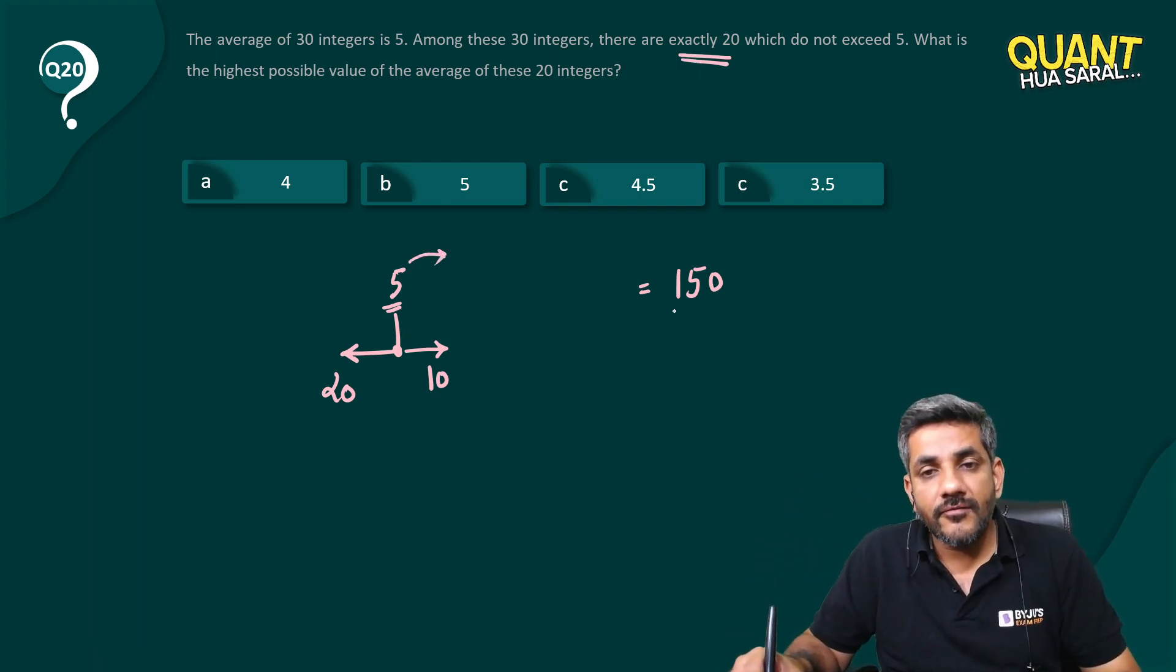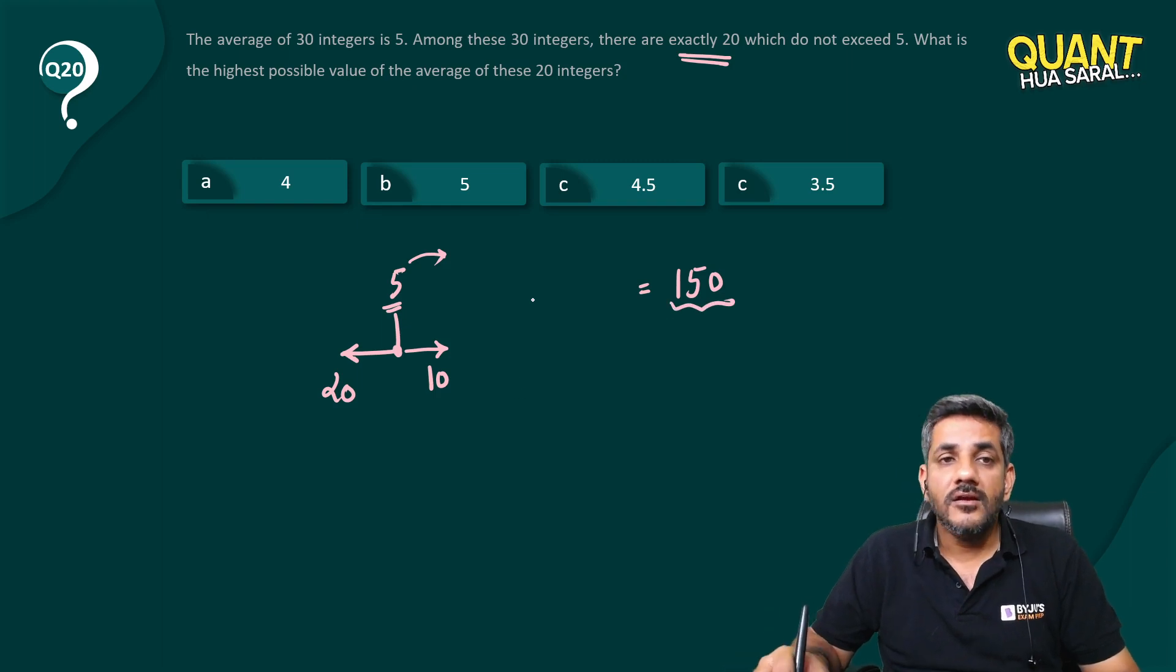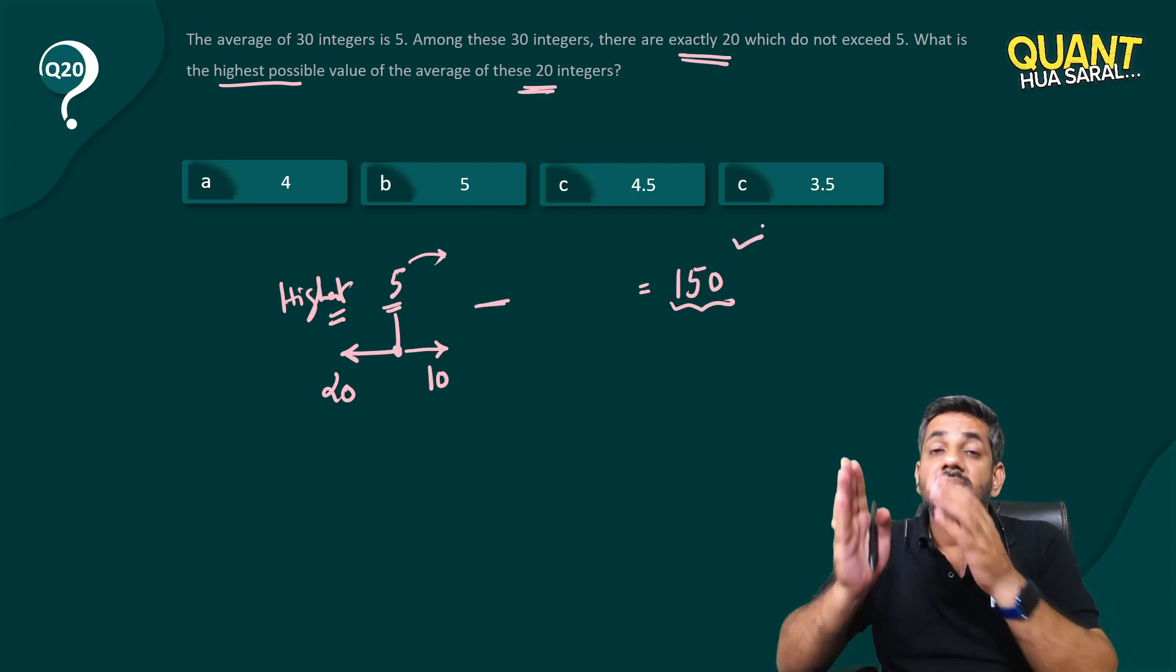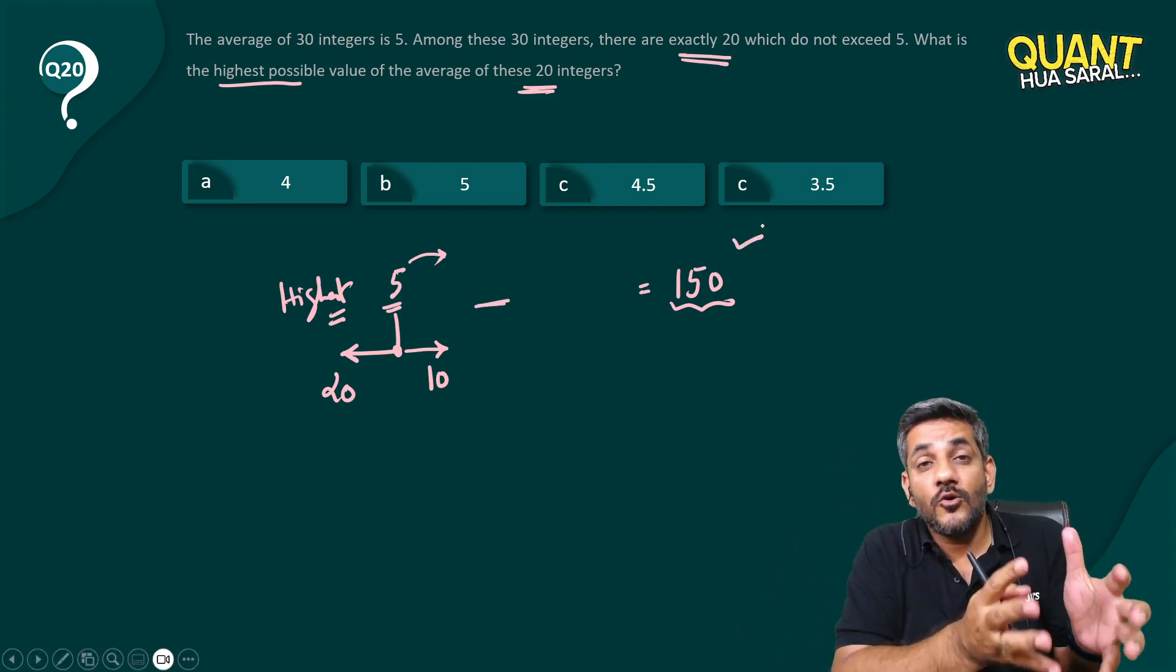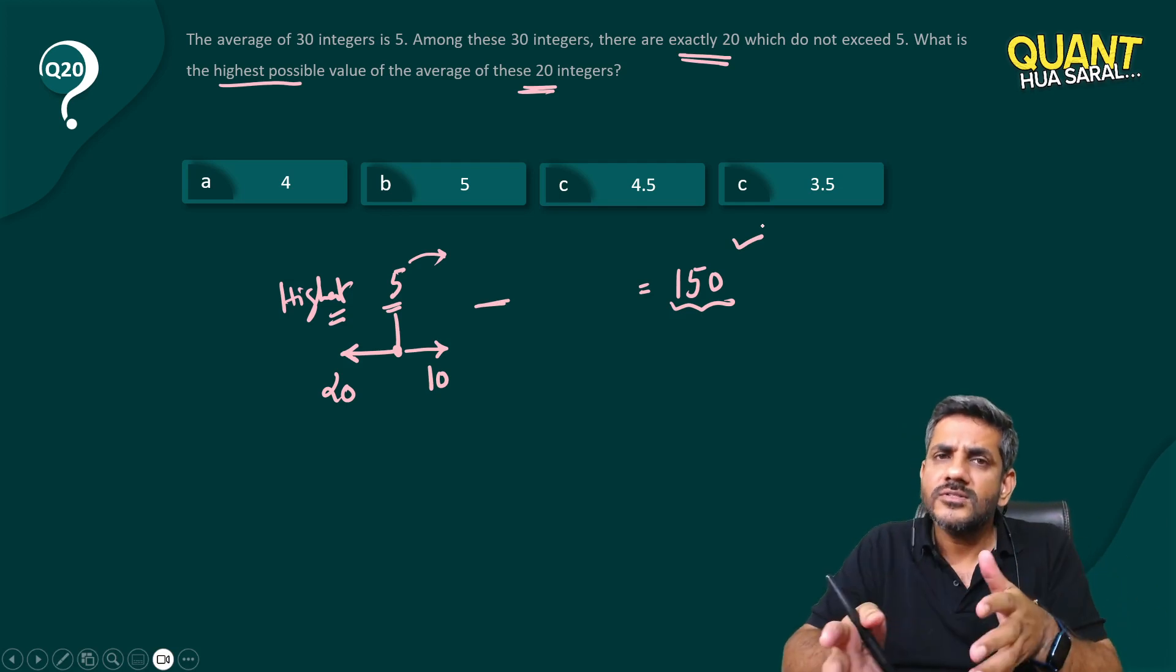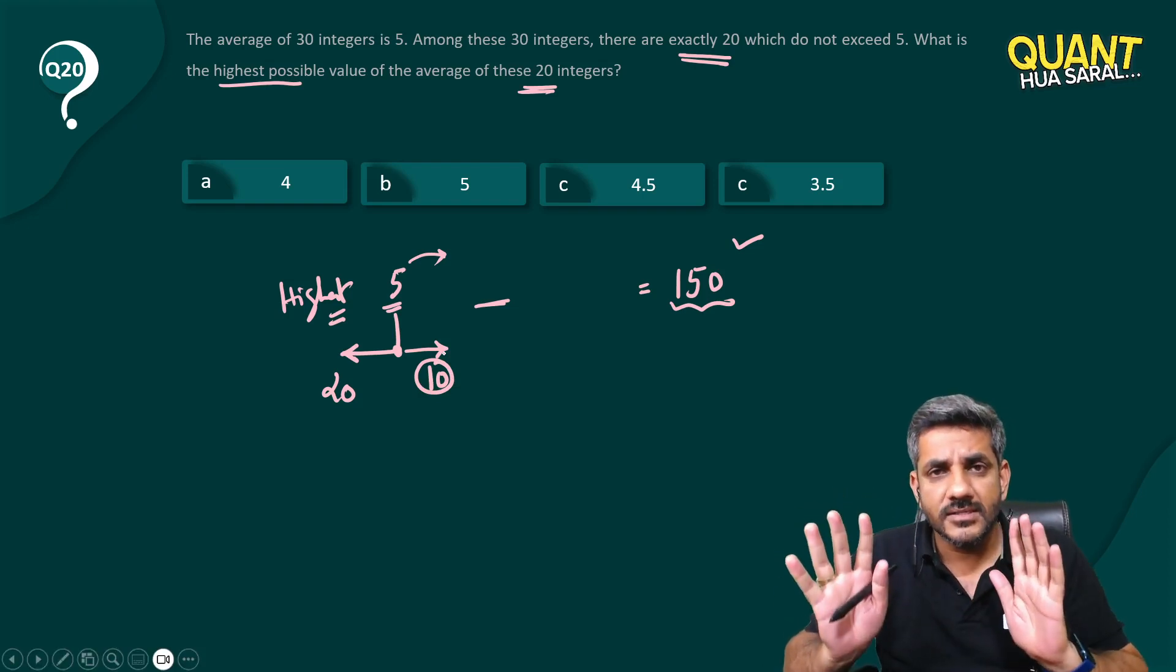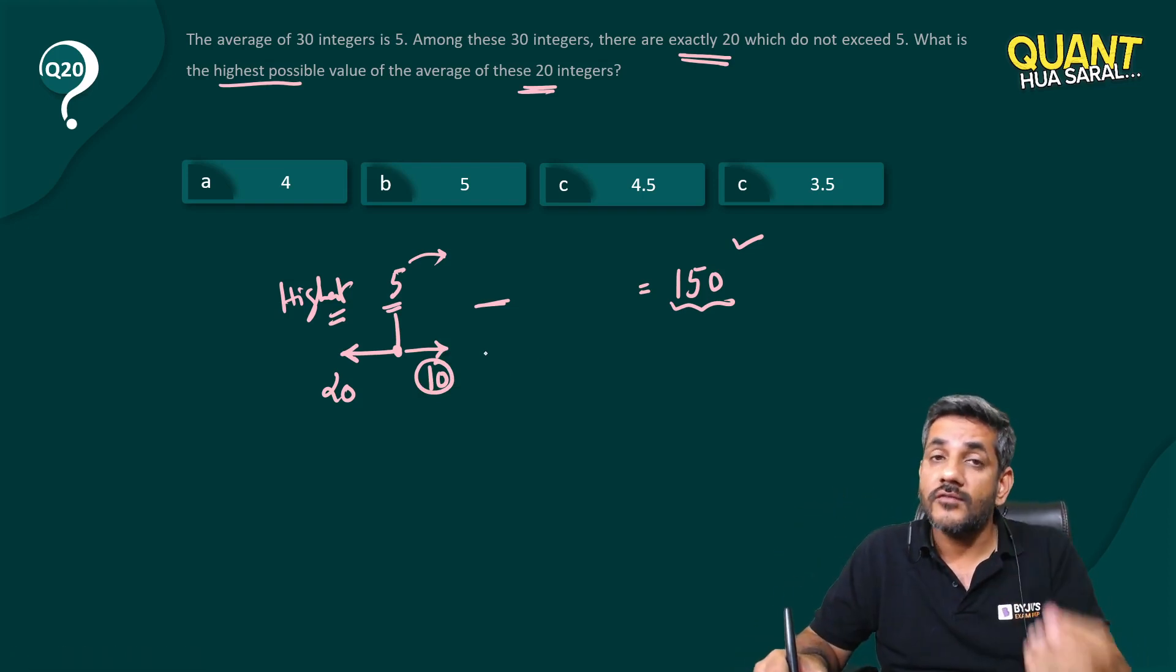If 10 numbers are above 5 and the sum of all the numbers is 150, the question is asking what is the highest possible average of these 20? I want their sum to be the highest possible. If the sum is 150, I want one group to be the highest. Of course, the other has to be the lowest, right? So these 10 numbers should have the minimum possible sum.